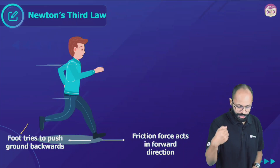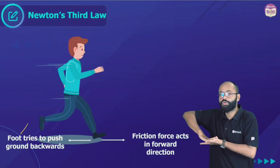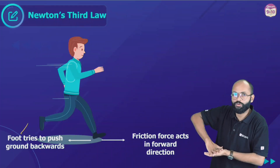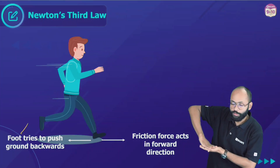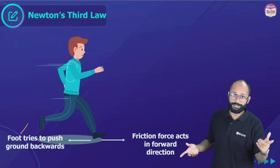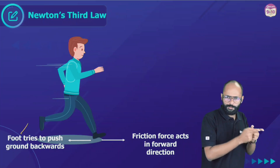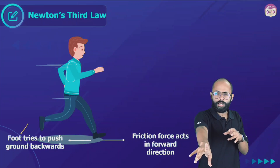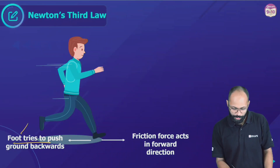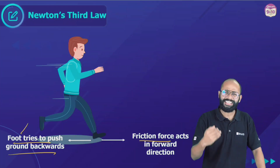While walking, the foot tries to push the ground backwards. When you push the ground backwards, the ground pushes you forward — effectively making you move forward. You push a wall and the wall applies a force back on you, so you go back. This is Newton's third law. Also, when sitting on a chair with rolling wheels, you push someone and you move back — Newton's third law. The foot tries to push the ground backwards; friction acts in the forward direction, effectively making you move forward. If there is no friction, your foot will slip.